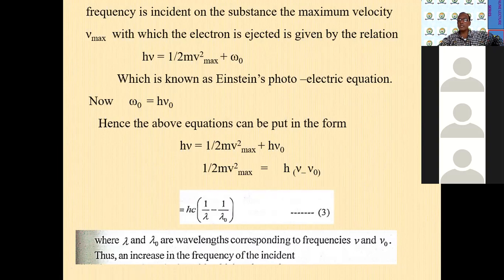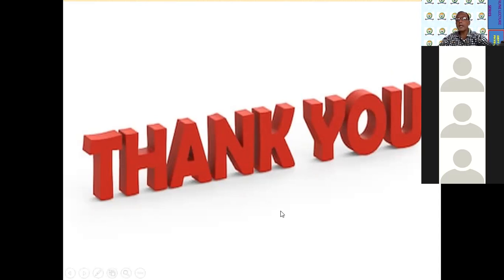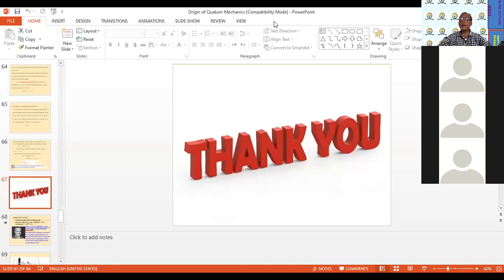With this, I have covered Wien's Law, Rayleigh-Jeans Law, and Einstein's photoelectric equation — showing how Einstein successfully explained the photoelectric effect using the quantum mechanical concept. We shall stop here today. One more article — the Compton effect — is remaining from this section, which I will cover in the next class at the same time. If you have any questions, please ask. Are you ready to attend the next period tomorrow at the same time so we can complete this chapter?